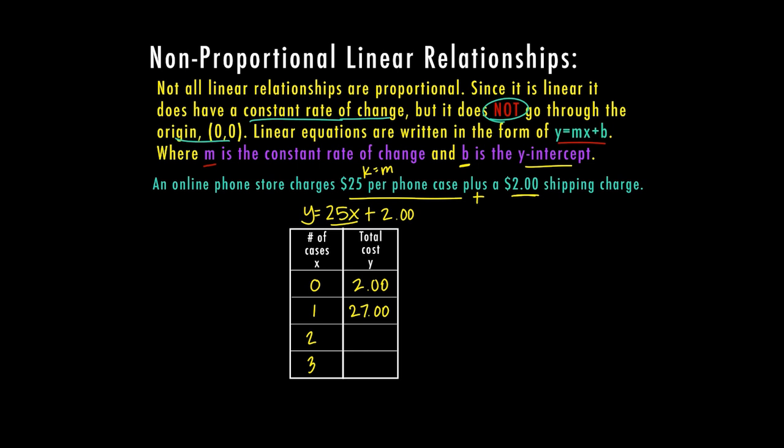Two phones would cost us $25 per case, so that's $50 plus the $2 shipping fee. Three phone cases are going to cost us $75 plus the $2 shipping fee. This is how your add-on works. It's not an add-on for each item. It doesn't say $2 per phone case, just a $2 shipping charge. It doesn't matter how many you purchase, you're still going to have to pay that $2.